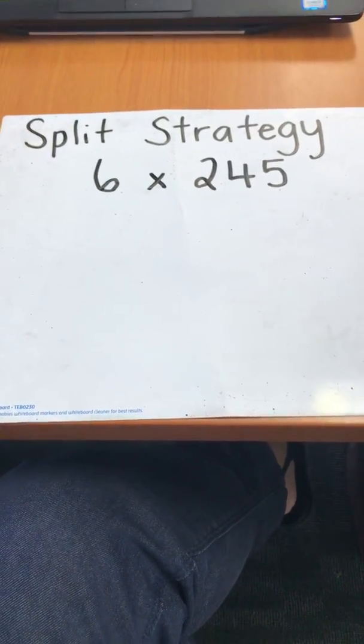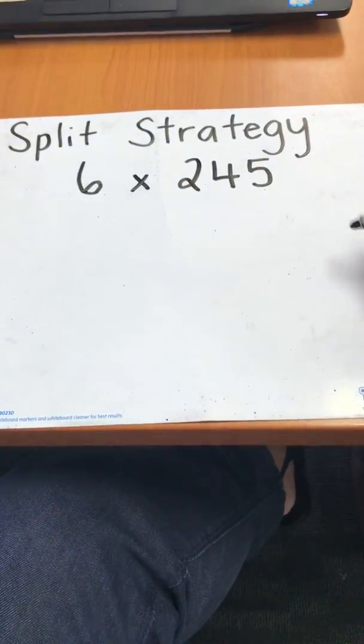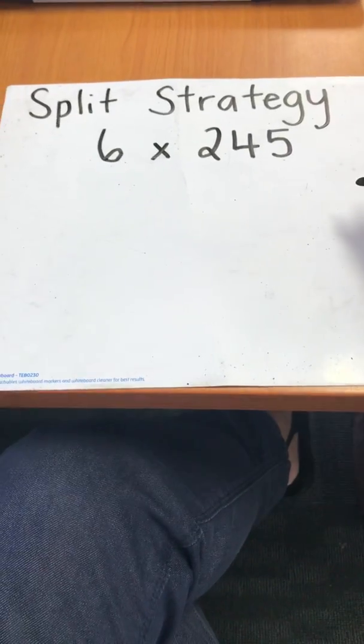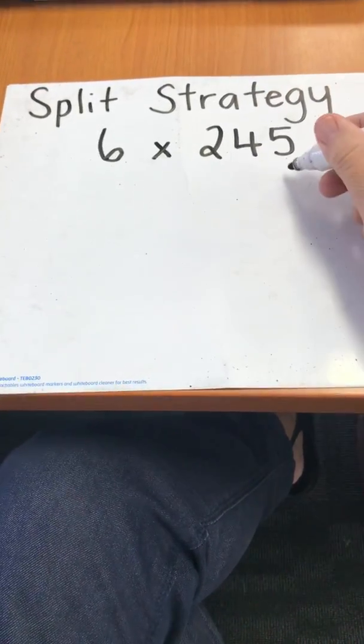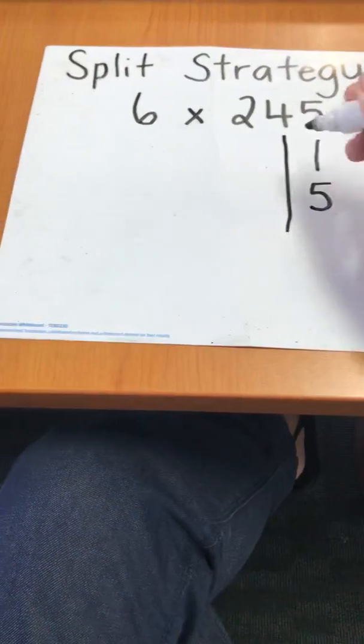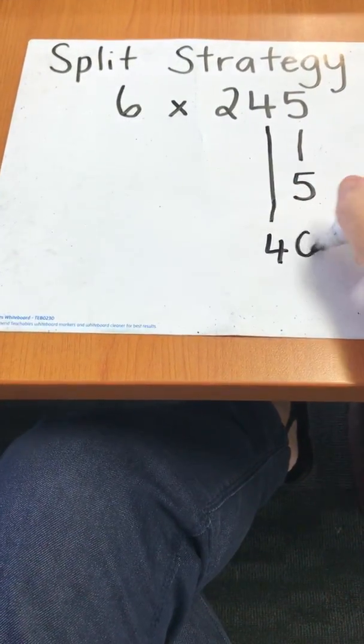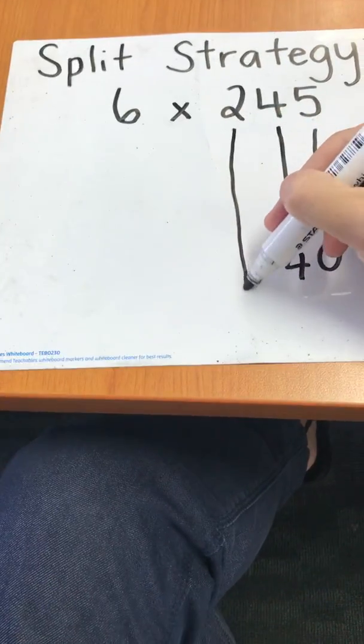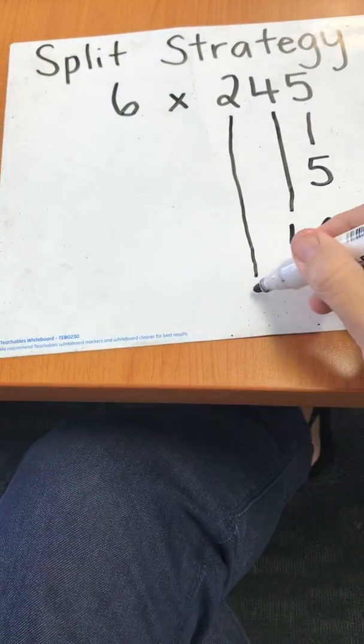To use the split strategy, you need to break apart this number into its place values. So 5 would be 5, 4 is 40, and the 2 is 200.